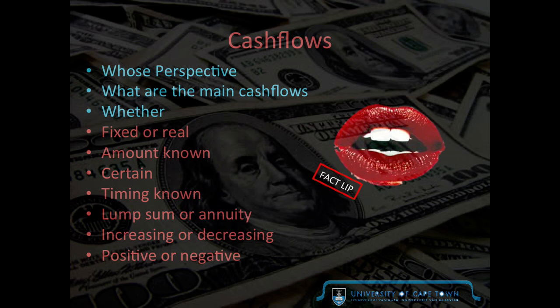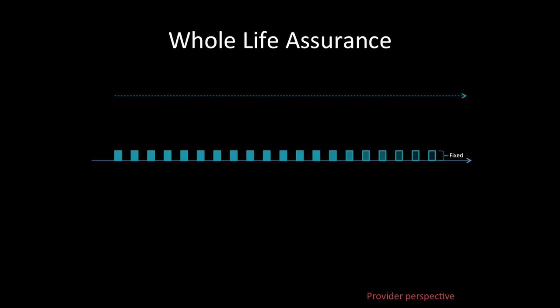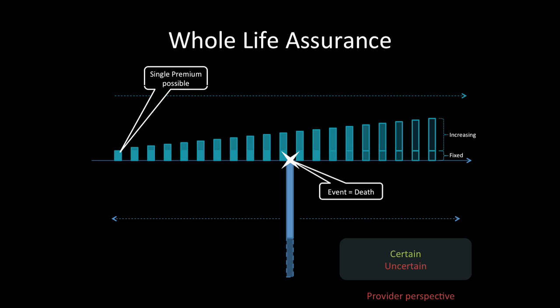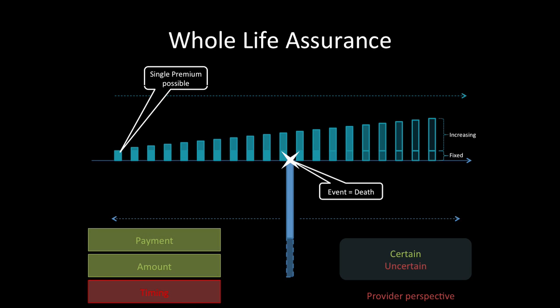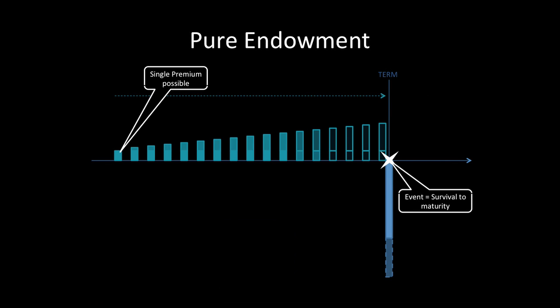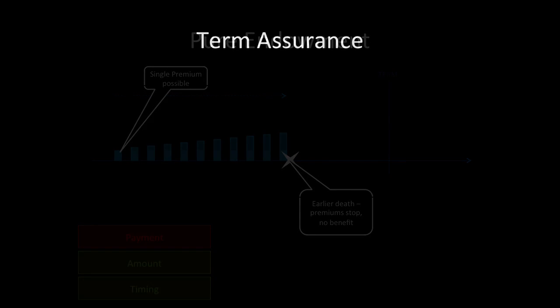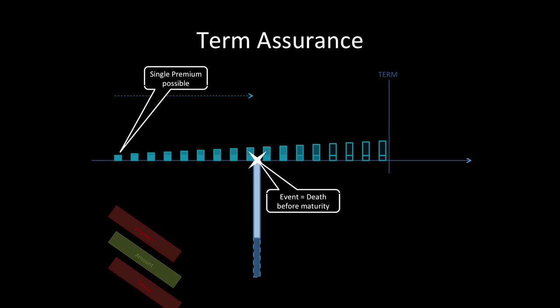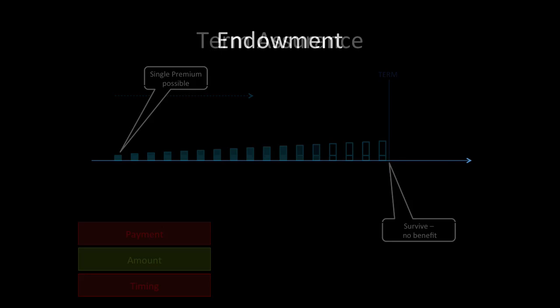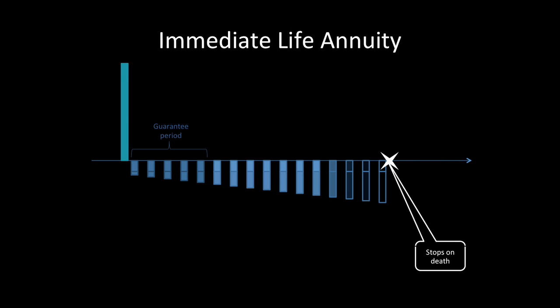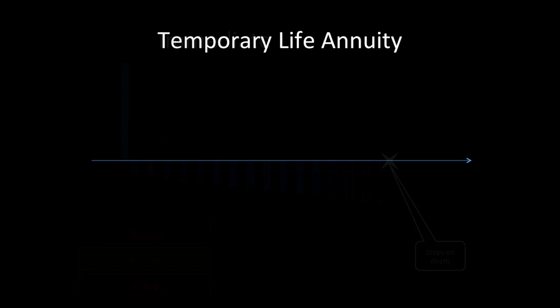Whole life assurance. Now what we're going to do with these is the green means certain and the red means uncertain. Whole life assurance: payment and amount certain, timing uncertain. Pure endowment, the immediate life annuity - you should know these from earlier courses.